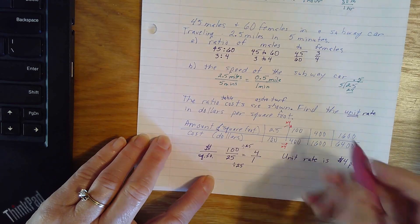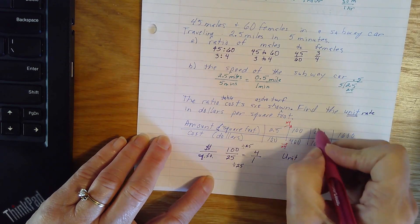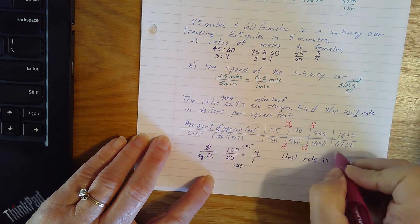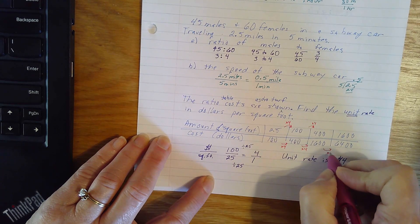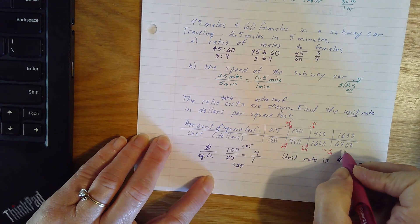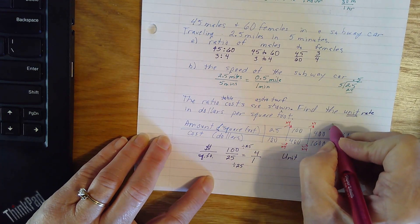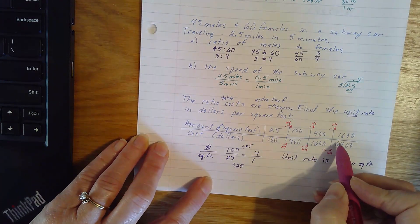You see, I did that multiple times, or this was done multiple times. 100 times 4, 400 times 4, multiplying by 4 again. 1,600 times 4 is 6,400. 400 times 4 is 1,600.